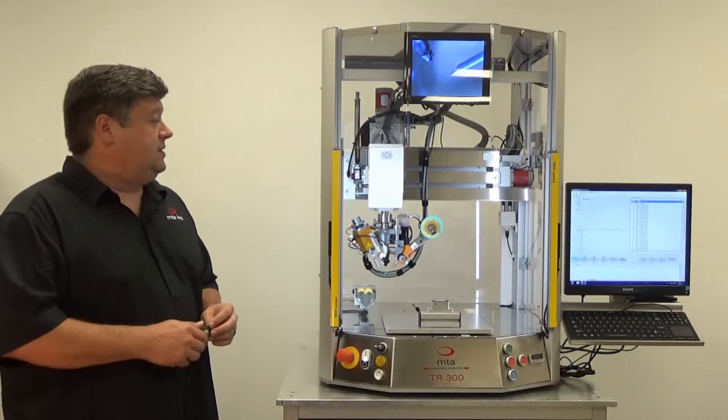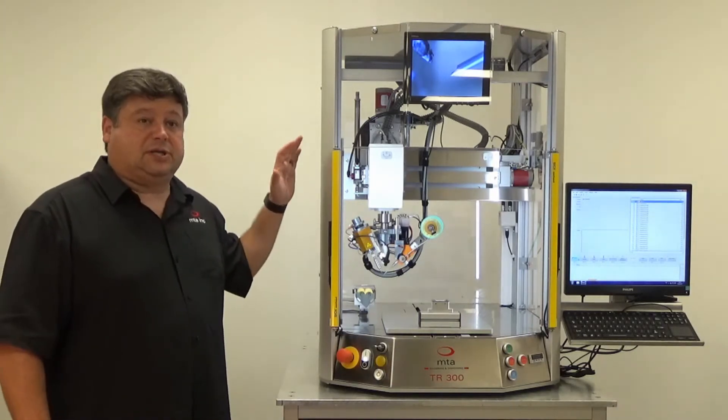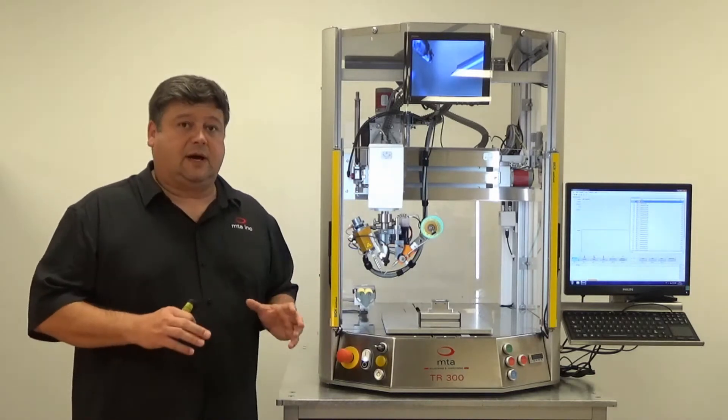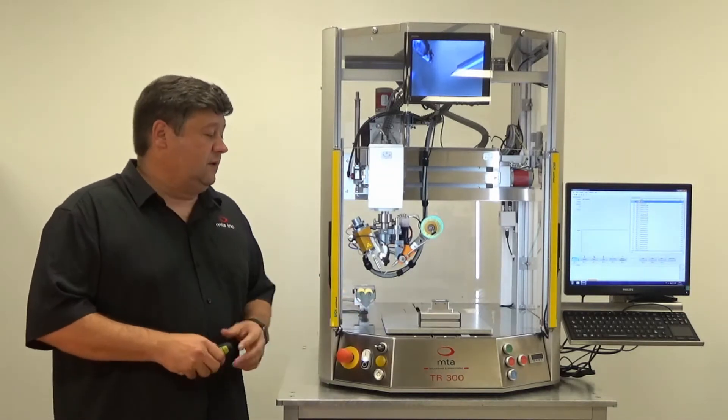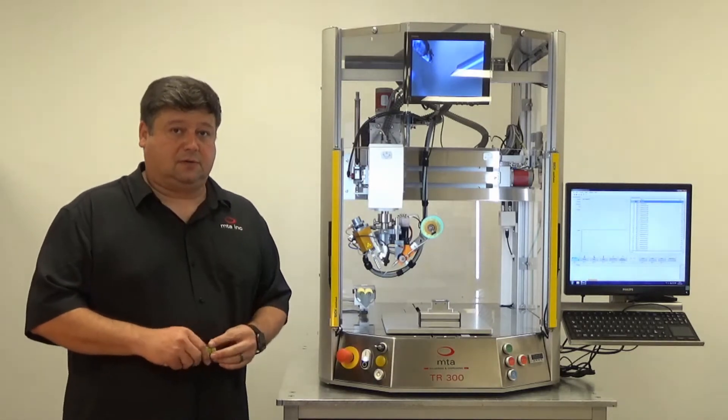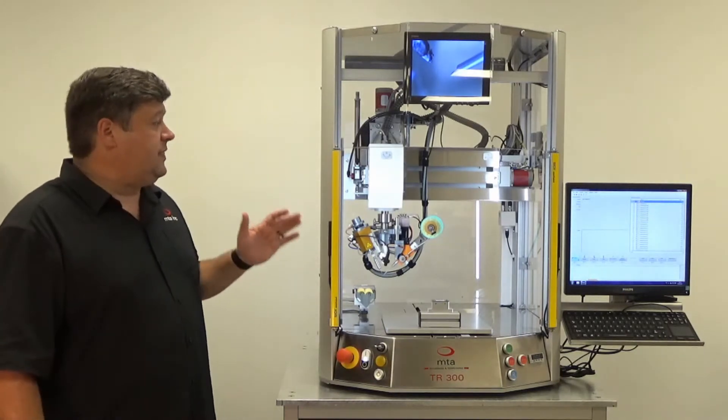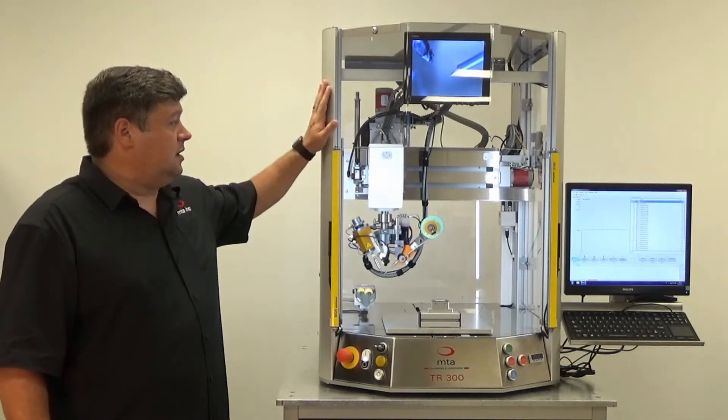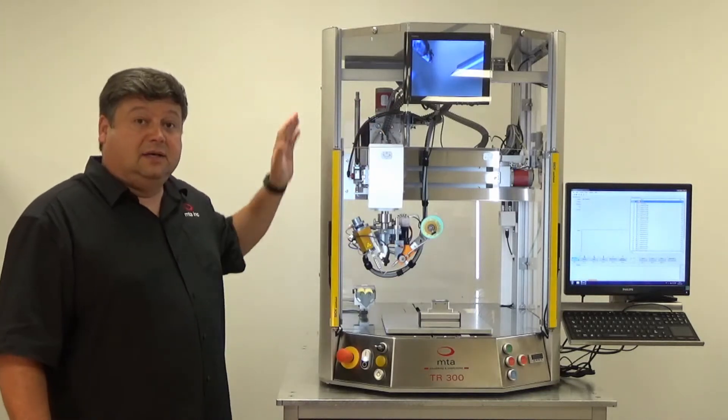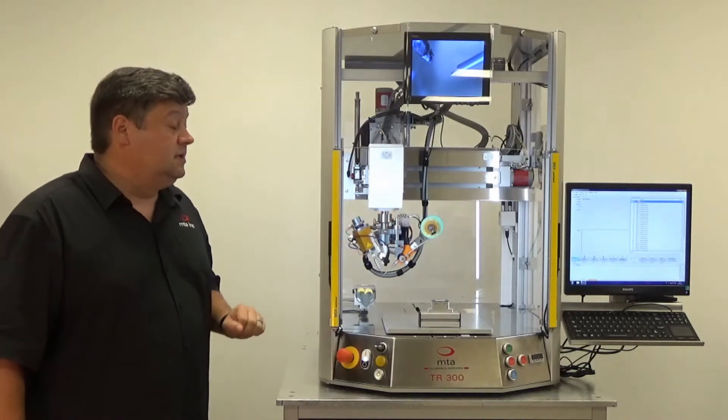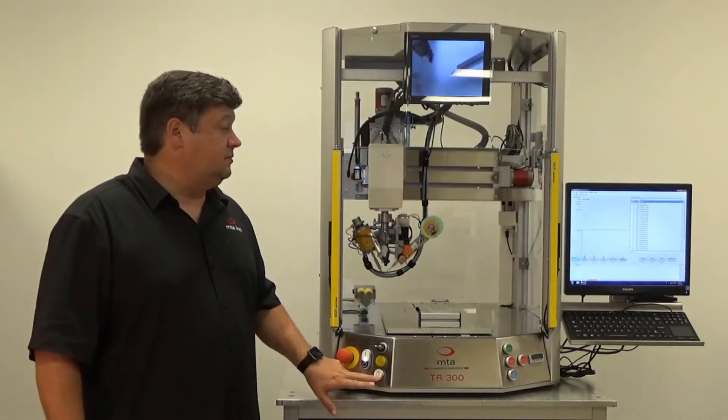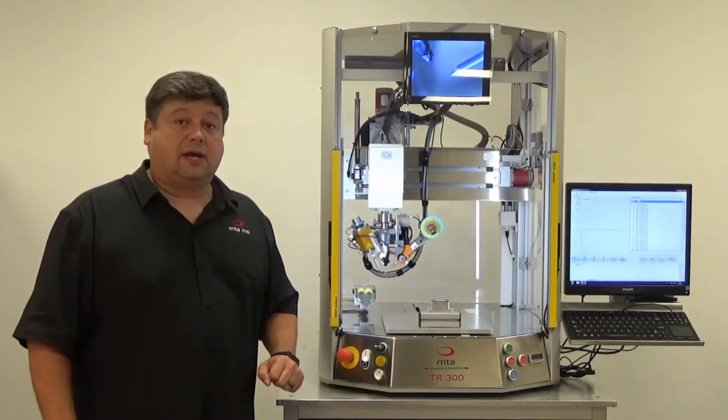The next thing I'd like to point out to you is that this is a purpose-built machine. This is not a laboratory robot that we've strapped a soldering iron onto. This machine was built from the ground up with the intended purpose of doing tabletop soldering. So with that, you'll notice that it comes with its own frame system with guarding on all sides. There's a light curtain in the front to protect your operators. It has its own illumination system to light up the work area.